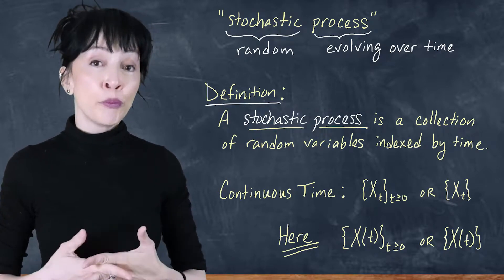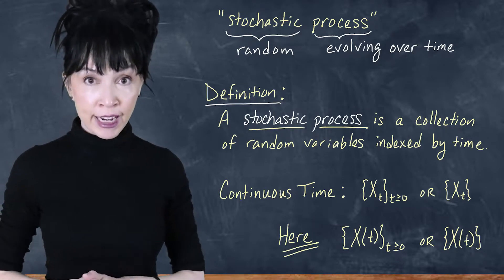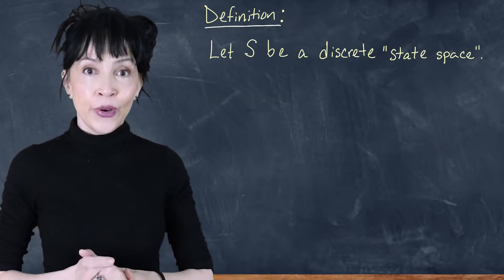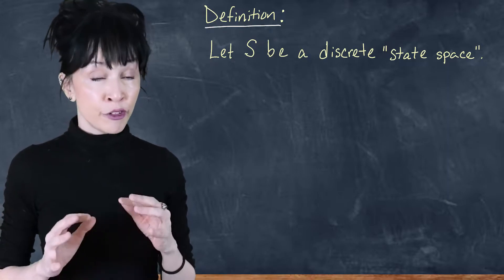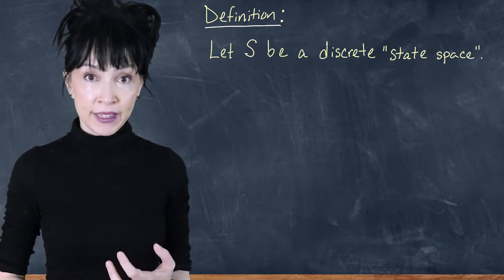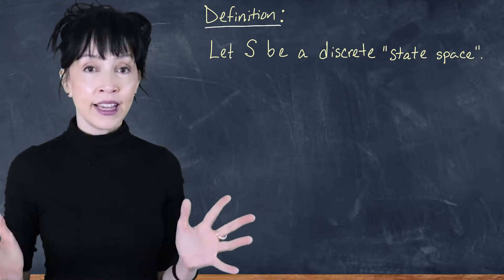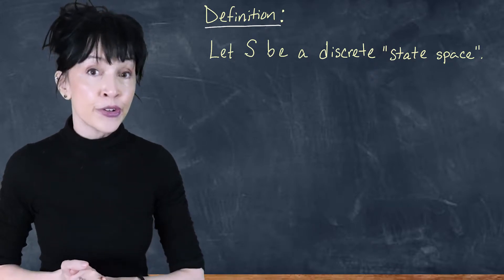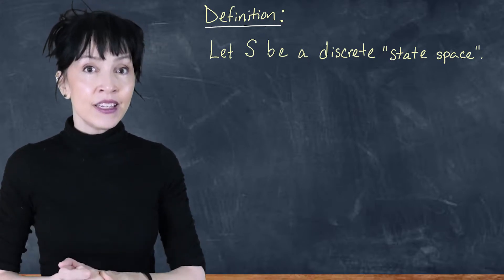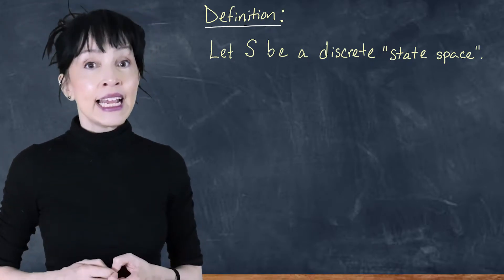A Markov chain or Markov process — these are equivalent — is a stochastic process, so a collection of random variables, and they live on some state space that we're going to call S. We're going to talk first, and for quite a while, about the discrete time Markov chain on a discrete state space. The state space could be finite or infinite — it might be all non-negative integers, all integers including negatives, or just the numbers one, two, and three.